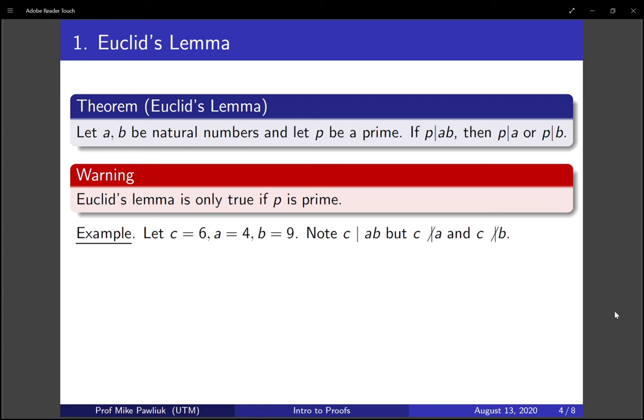Now this is important that p is a prime in this case. So for example, if c is a composite number like 6, then the version of Euclid's Lemma might not be true. For example, 6 divides 4 times 9, which is 36, but 6 doesn't divide 4, and 6 doesn't divide 9. So it's very important that p is a prime here.